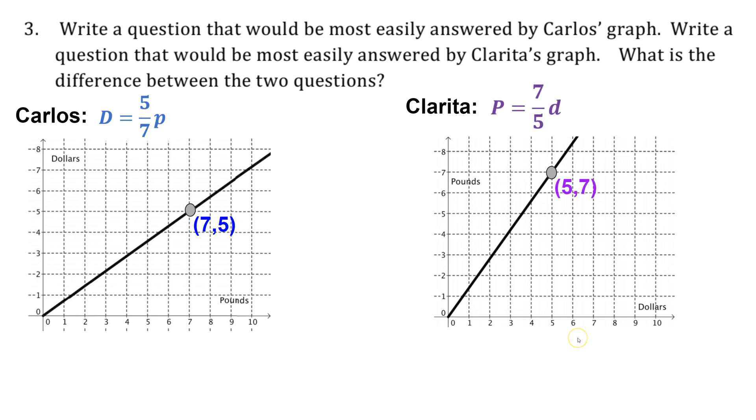Clarita, on the other hand, would have gotten the function P equals 7 fifths D because her rise was 7 and her run was 5 due to the different way that she represented the situation with dollars on the x-axis and pounds on the y-axis. So those are the equations of both of their graphs.